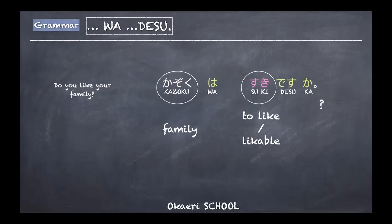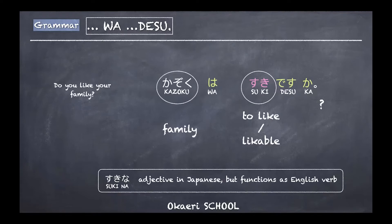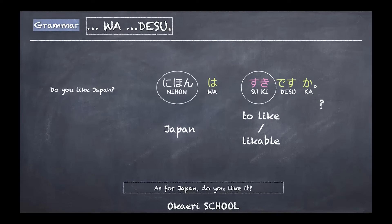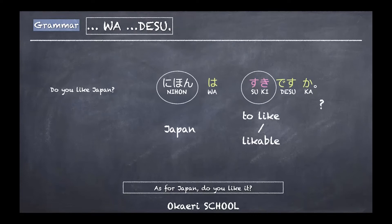Do you like your family? Kazoku wa suki desu ka. With the same structure, you can replace the topic — for example, Japan in Japanese is nihon. So: nihon wa suki desu ka — do you like Japan? Grammatically it means 'regarding Japan, is it likable?' but in normal translation you simply say 'do you like Japan?'